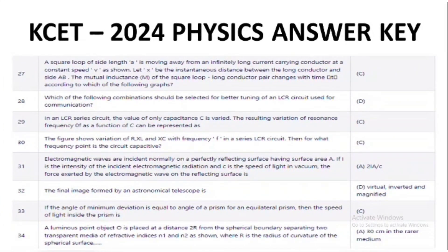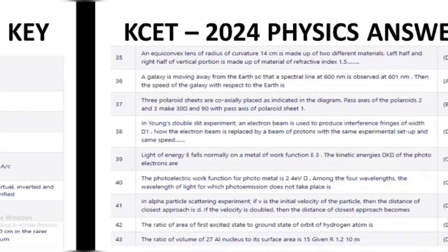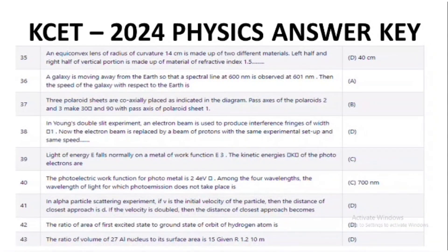Now 27 to 34 — we have given the correct option. Since some options are very big, we've just given the correct option. The questions and options will be the same across sets, but the order will change based on the set. Now 35 to 43 — we have given questions and answers, and for some we have given just the correct option.